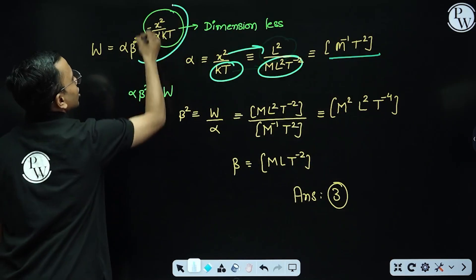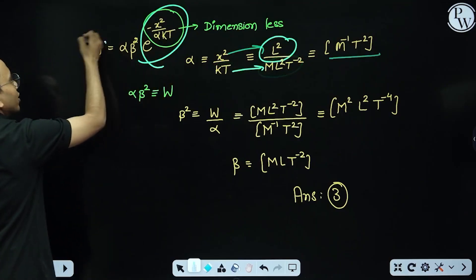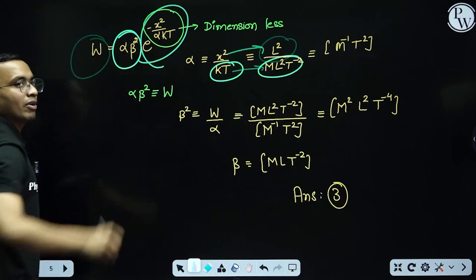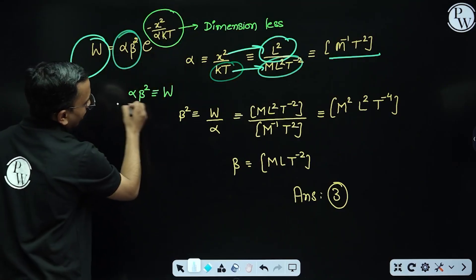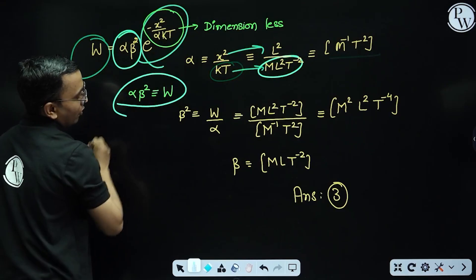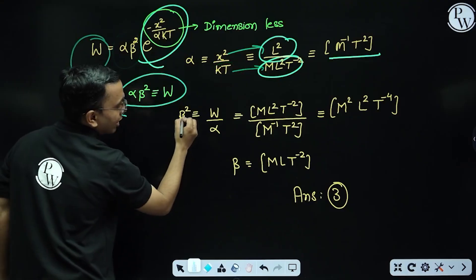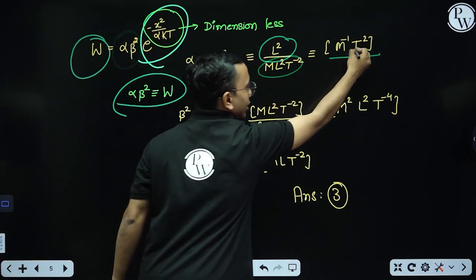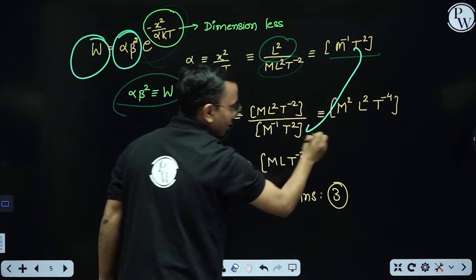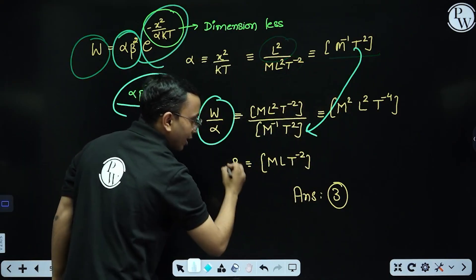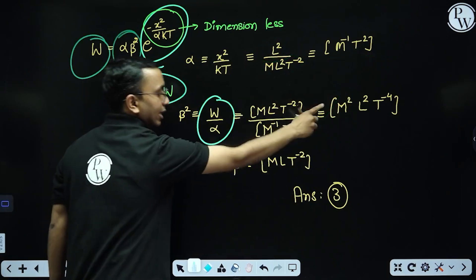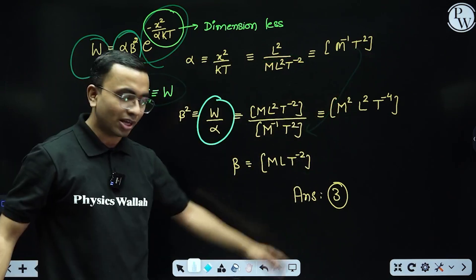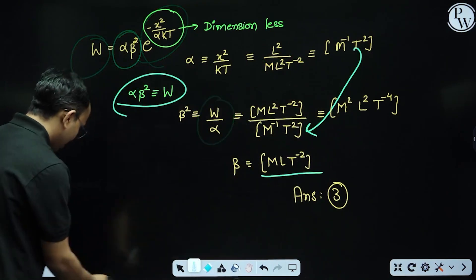Since the argument is dimensionless, the dimension of work done equals the dimension of alpha·beta². From there I got dimensions of beta². Using the dimensions of work done divided by alpha and taking the square root, I got the dimensions of beta. The answer comes out to be option three.